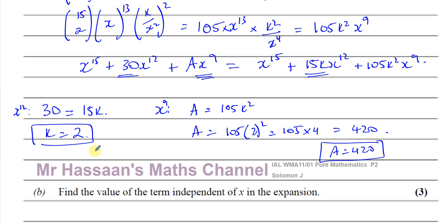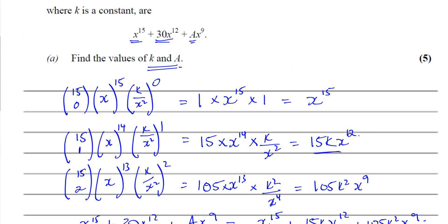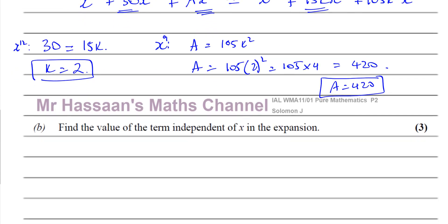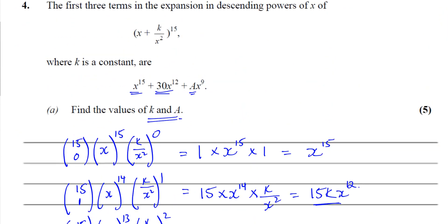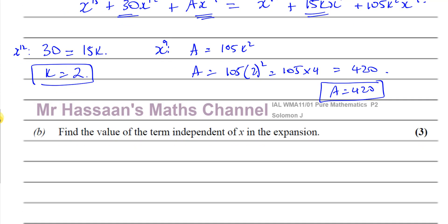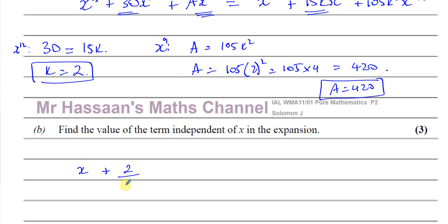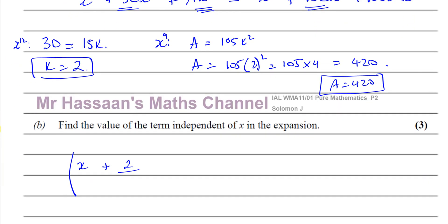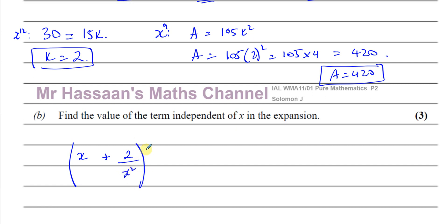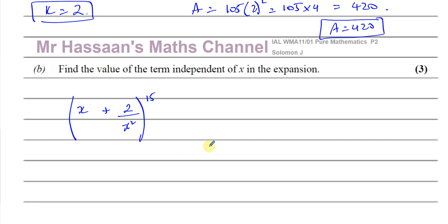That's the answer for question 4 part a of Solomon J. Now I'm going to go on to part b. It says find the value of the term independent of x in the expansion of (x + 2/x²) to the power of 15. The term independent of x means a term where there'll be no x - it'll just be a constant.